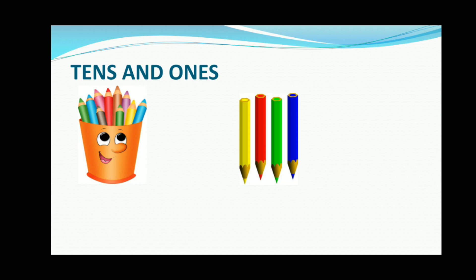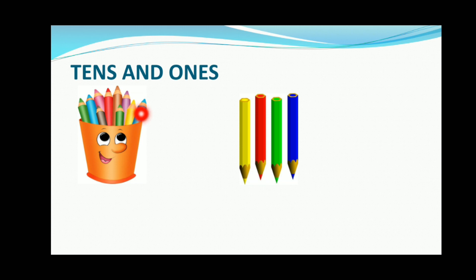Now let's learn about tens and ones. As you can see, there is a group of some color pens together in a box. Let's count: 1, 2, 3, 4, 5, 6, 7, 8, 9, 10. It means one group of tens having 10 color pencils.